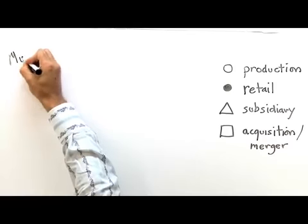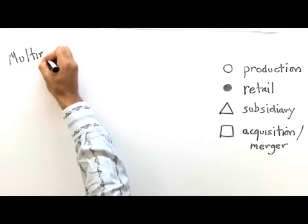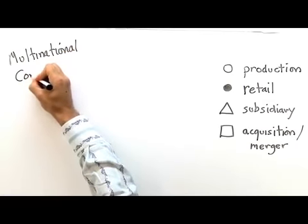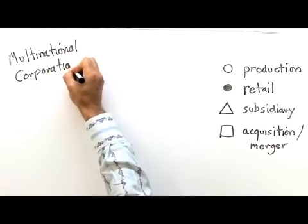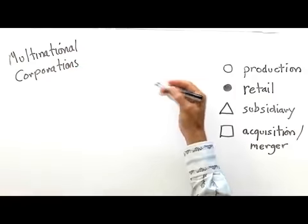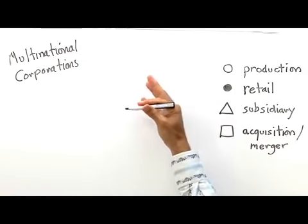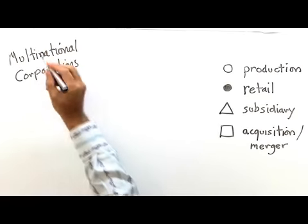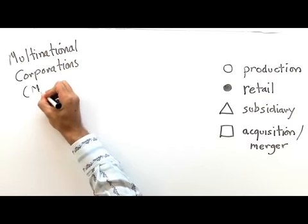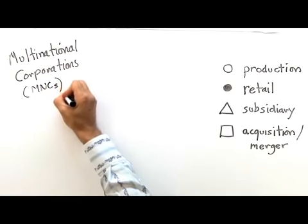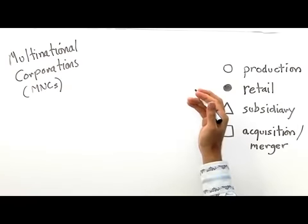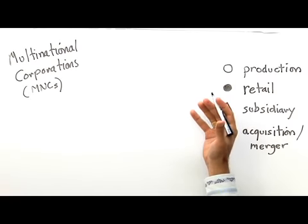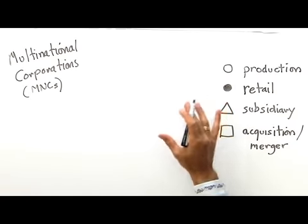Multinational corporations. Now, there are many different terms for multinational corporations. You will see international companies, multinational enterprises, transnational corporations. But we're just going to use multinational corporations, and the most common abbreviation is MNCs. Now, multinational corporations are for-profit enterprises that conduct business in more than one country.